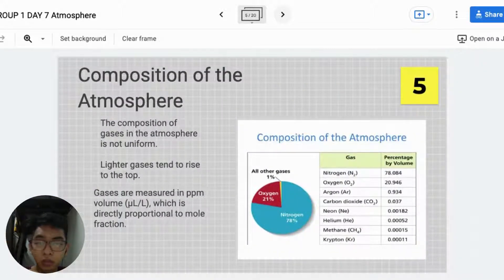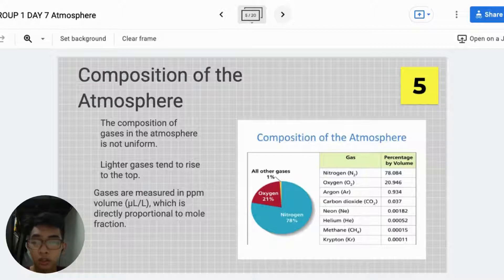Composition of the atmosphere. The composition of the gases in the atmosphere is not uniform. Lighter gases tend to rise to the top. Gases are measured in ppm volume, which is directly proportional to the mole fraction.